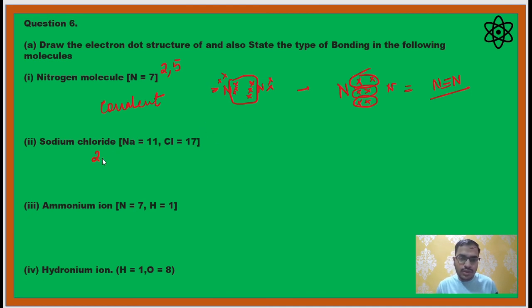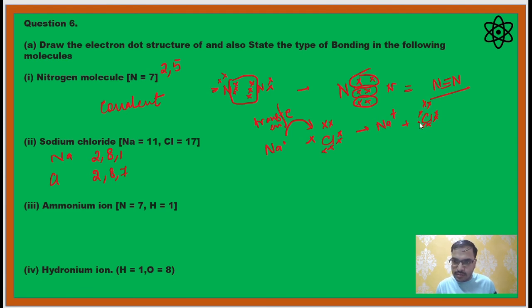Sodium chloride. Configuration of sodium is 2,8,1 and for chlorine it is 2,8,7. So sodium has one electron and chlorine has seven. Sodium will transfer its electron. It will form Na+ Cl-. As it is involving transfer of electrons, the type of bonding is ionic.